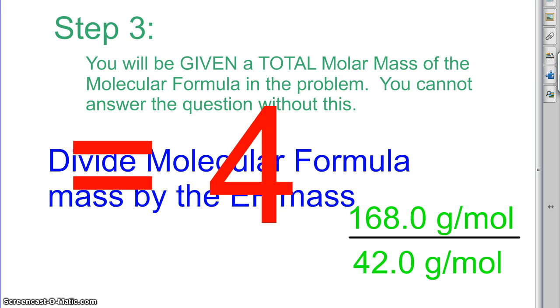168 divided by 42. Now, if you don't get a whole integer number like that, you probably did something wrong. You either found your molecular wrong, or you mixed up your math, or something like that. But that is our multiplier. 4 is our multiplier.